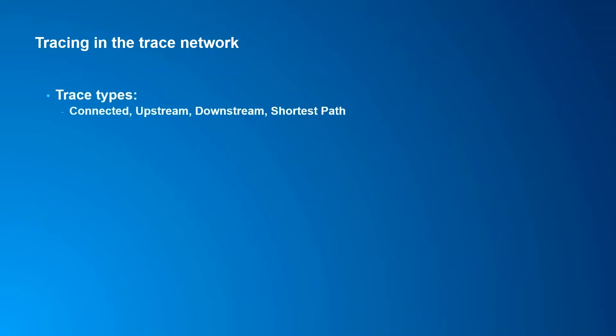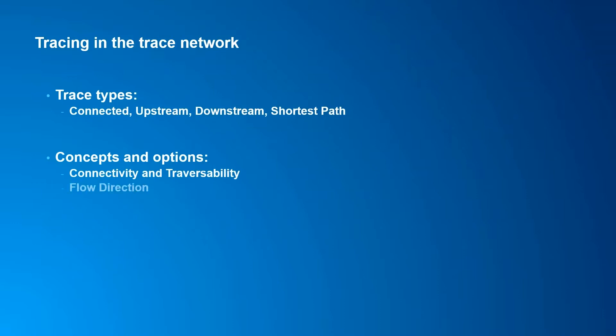In this video we will explore the four trace types available with the trace network in ArcGIS Pro 2.6 and walk through some scenarios with each. We'll take a look at connected trace as well as the upstream, downstream, and shortest path traces, and discuss related concepts and options such as connectivity and traversability, flow direction, validate consistency, condition barriers, functions, and result types.